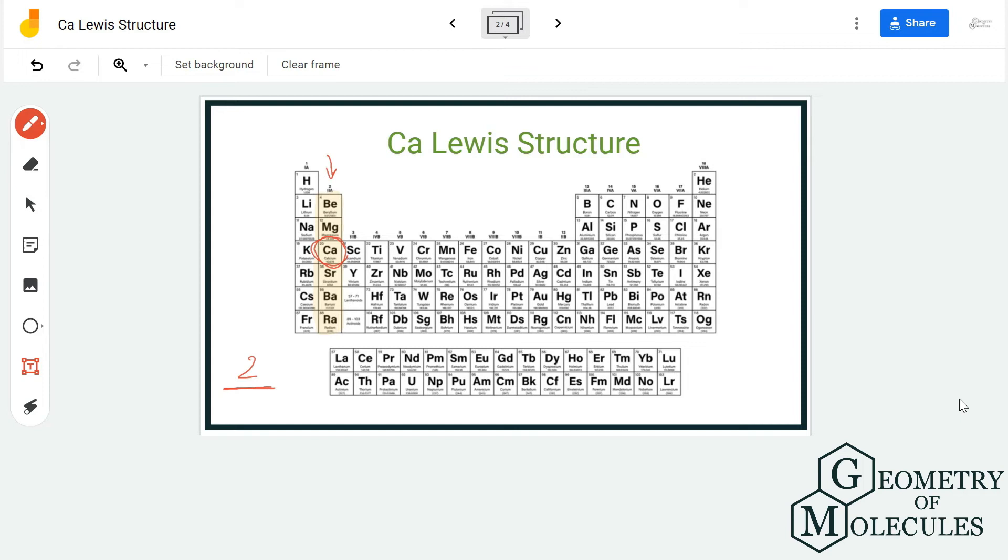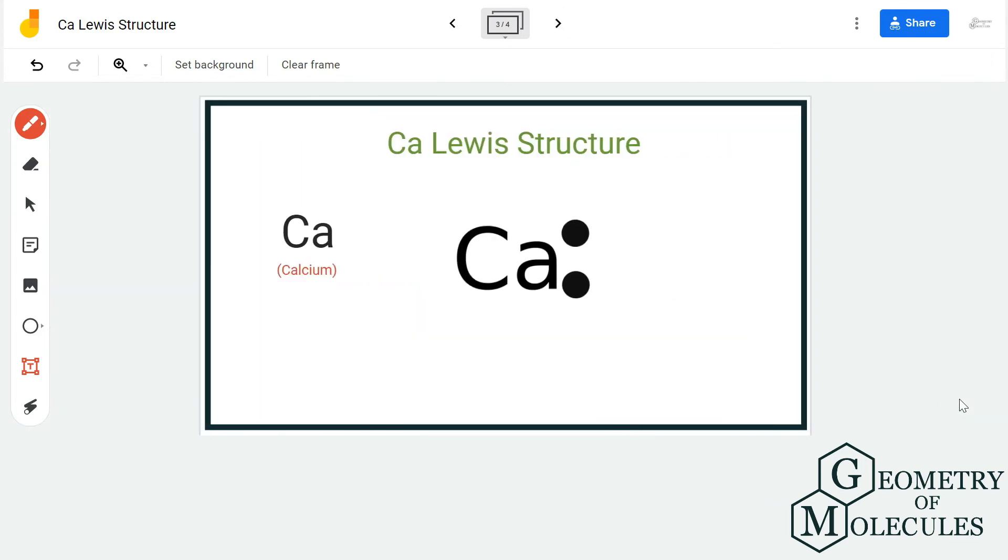So we are going to write CA, which is the element symbol for calcium, and place two dots over here. And this is the Lewis dot structure of calcium.